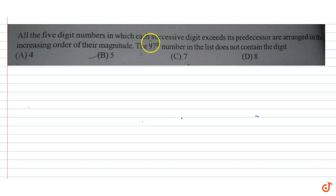All the 5-digit numbers in which each successive digit exceeds its predecessor are arranged in the increasing order of their magnitude. The 97th number in the list does not contain the digit. So if we can see here, where are the first 5-digit numbers? 1. After that, we will have 4 places: 1, 2, 3, 4.